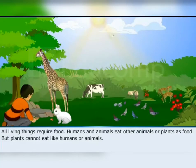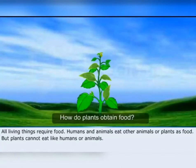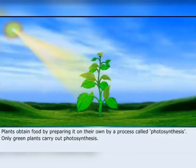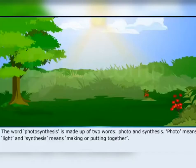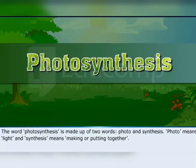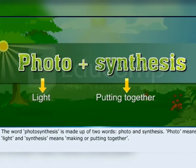All living things require food. Humans and animals eat other animals or plants as food, but plants cannot eat like humans or animals. Plants obtain food by preparing it on their own by a process called photosynthesis. Only green plants carry out photosynthesis. The word photosynthesis is made up of two words: photo and synthesis. Photo means light and synthesis means making or putting together.